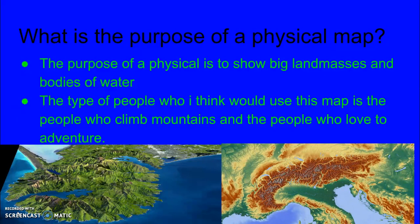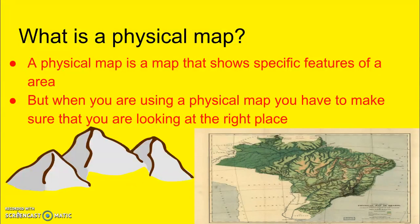What is the purpose of a physical map? The purpose of a physical map is to show big landmasses and bodies of water. The type of people who would use this map are people who climb mountains and people who love adventure. A physical map is a map to show specific features of an area, but when you're using a physical map, you have to make sure that you are looking at the right place.